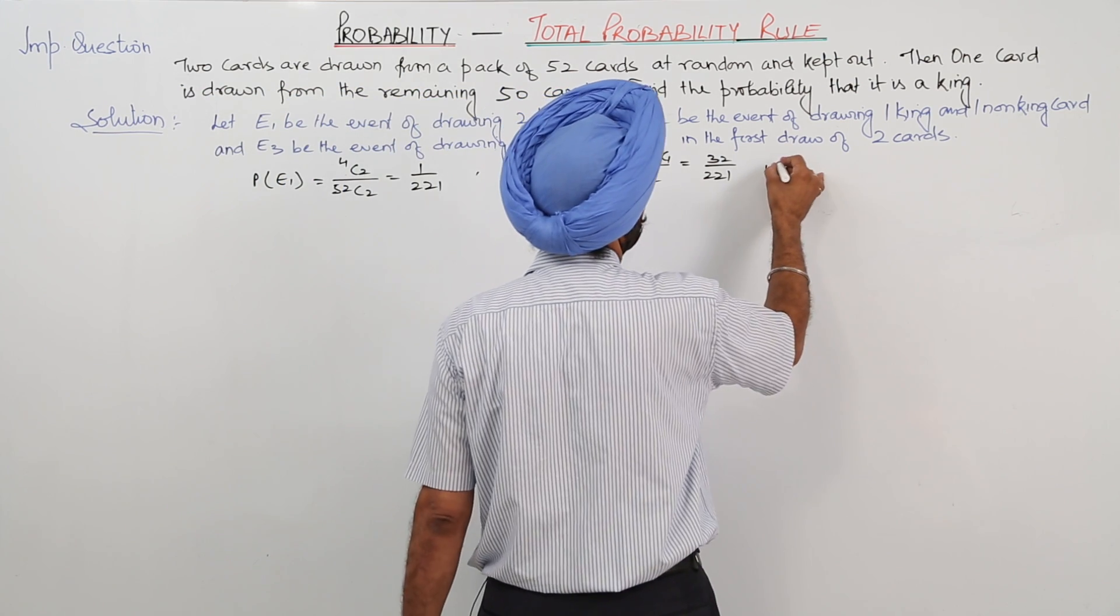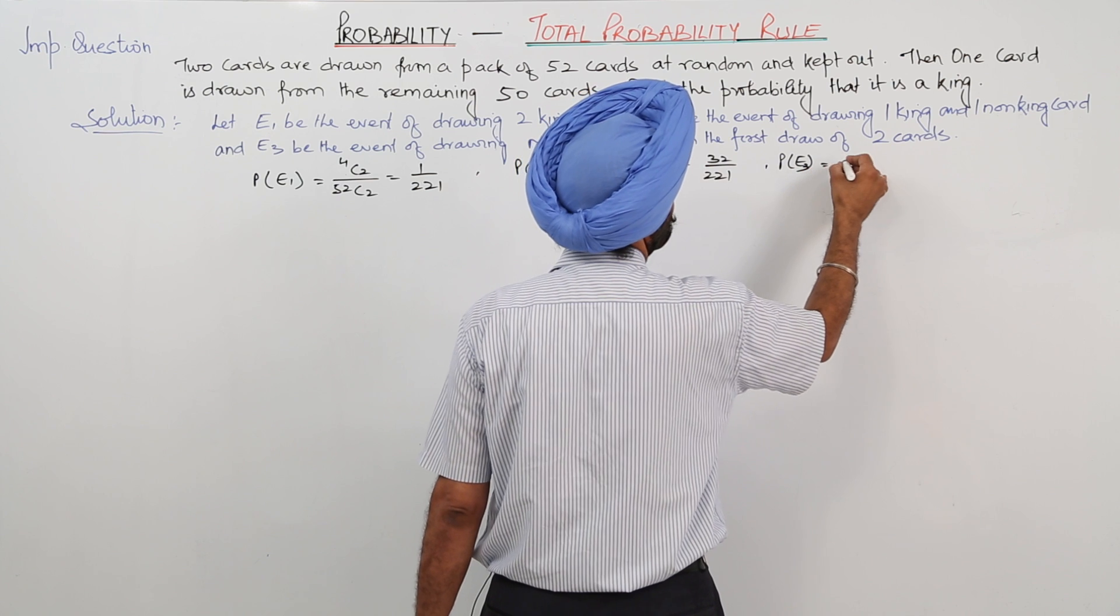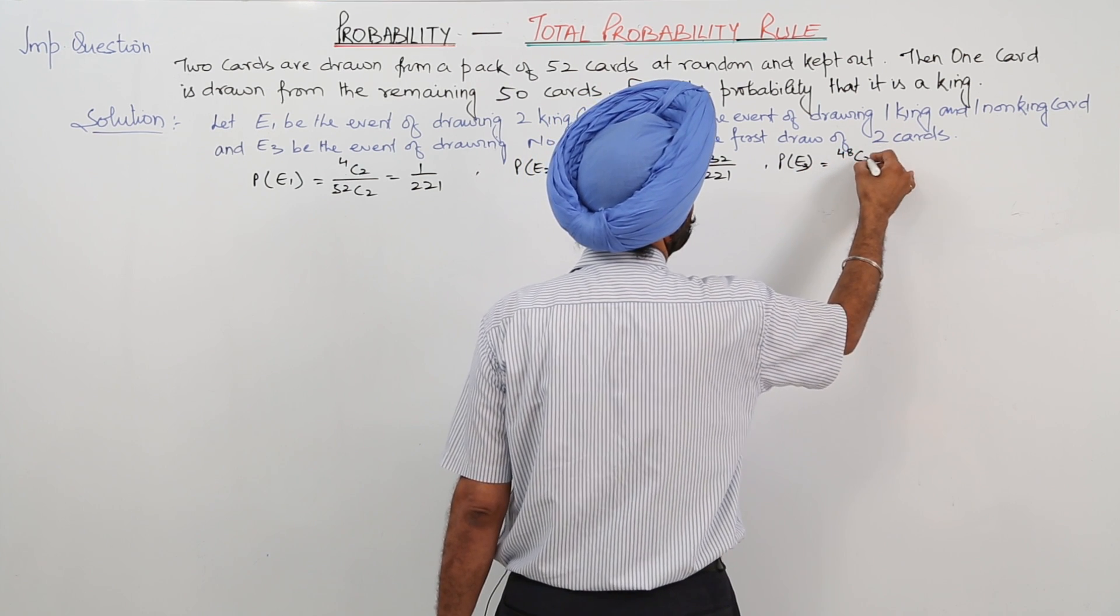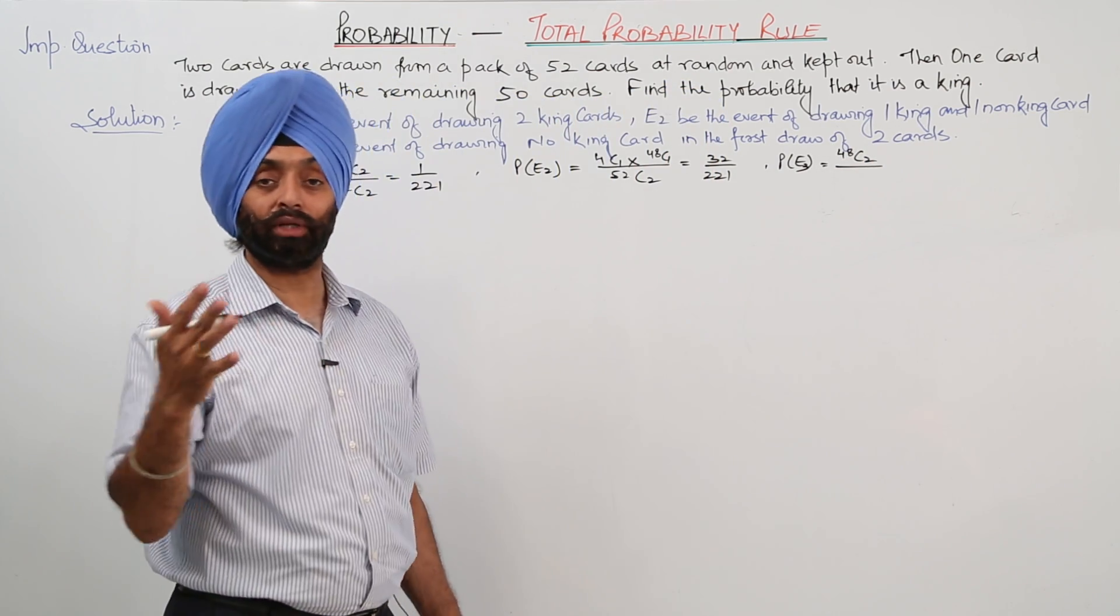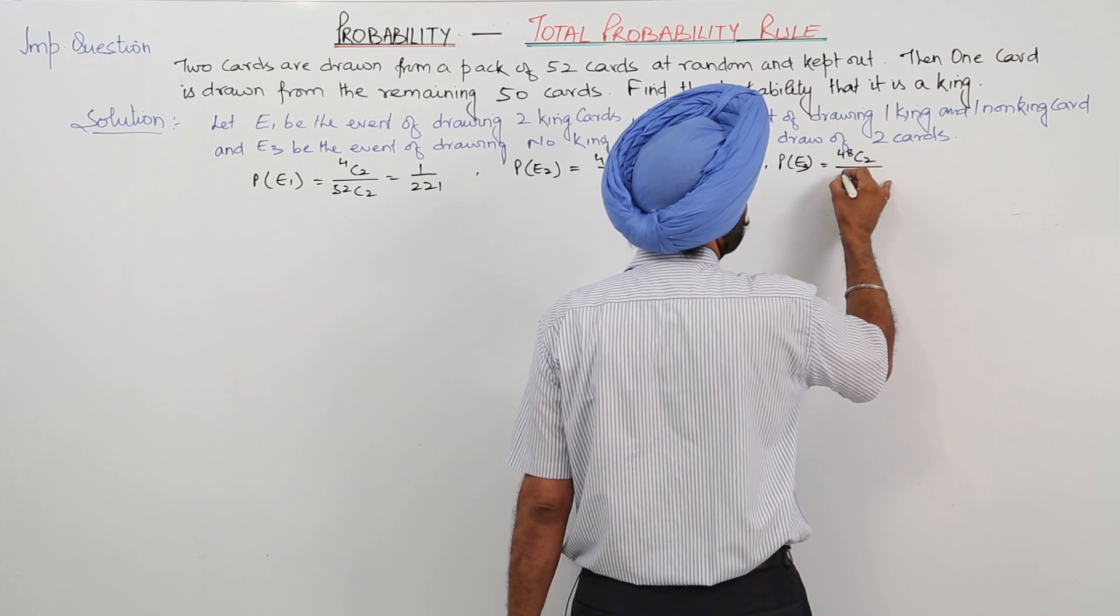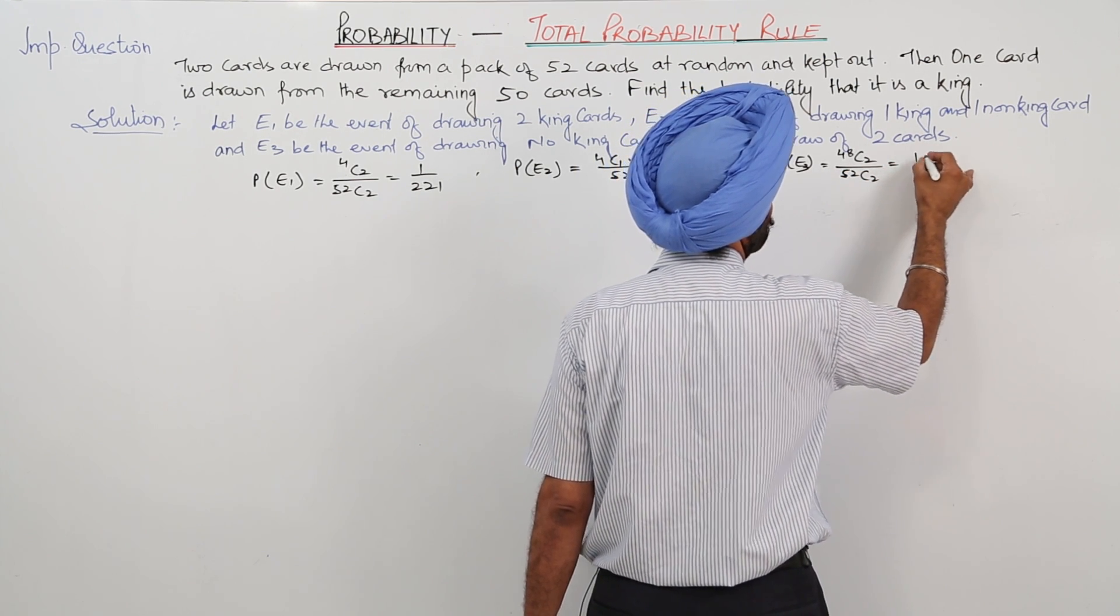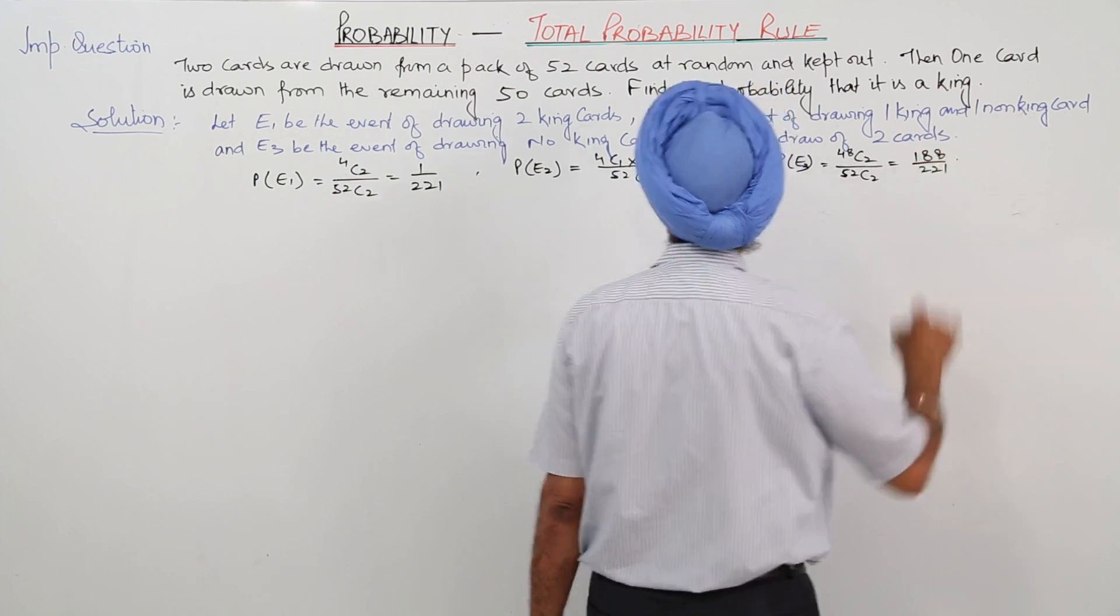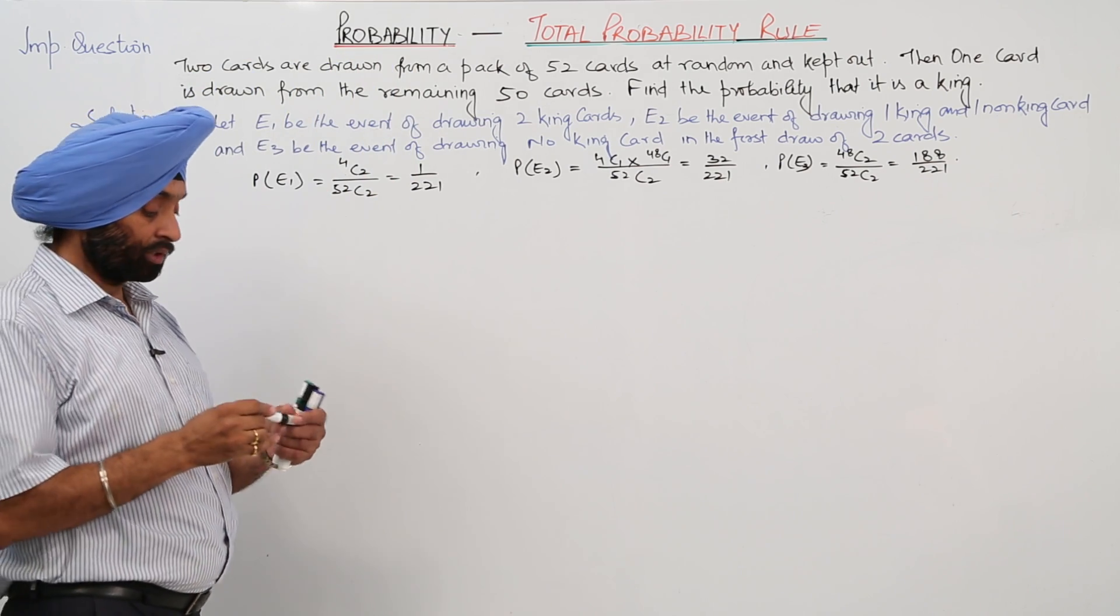And the third is no king cards. So this will be 48C2, because 4 cards when they are removed only 48 cards are left. 48C2 upon 52C2. So this will be now on solving 188 upon 221. So these are the 3 probabilities for the 3 major events.